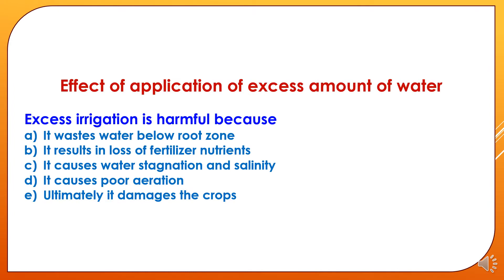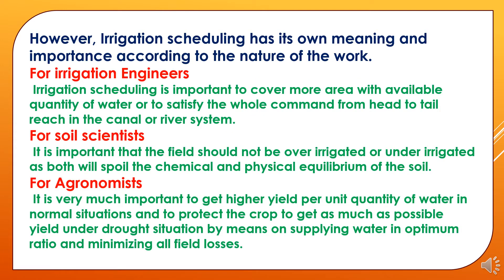Now we will study the effect of applying excess amounts of water. Excess irrigation is harmful because it wastes water below the root zone, results in loss of fertilizer nutrients due to leaching and other losses, causes water stagnation and salinity, causes poor aeration, and ultimately damages the crops.